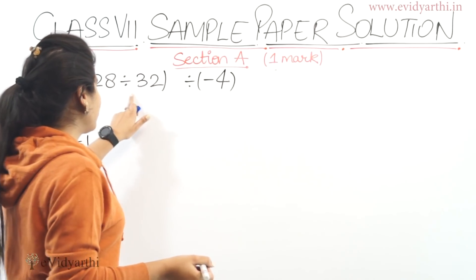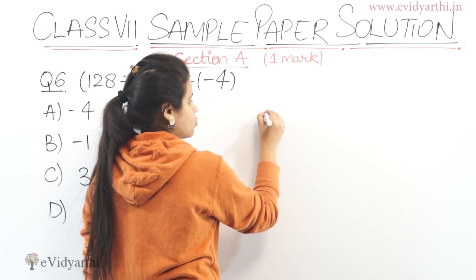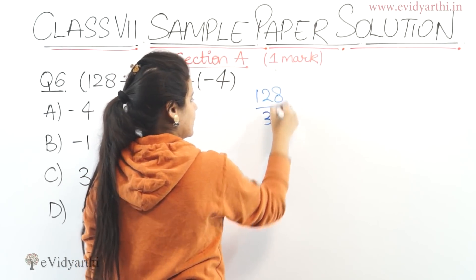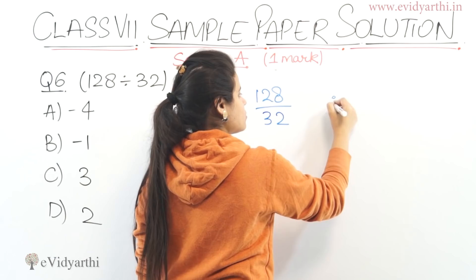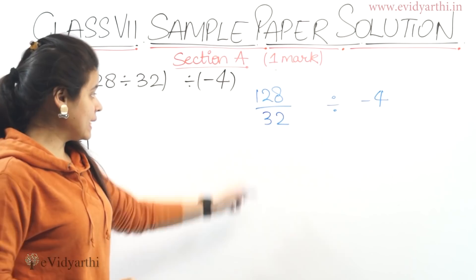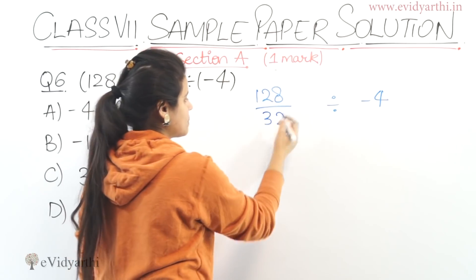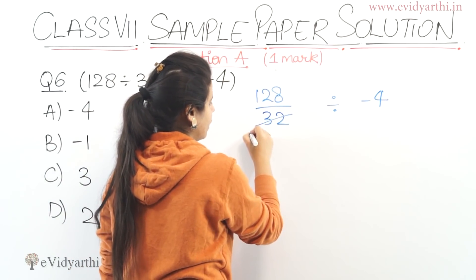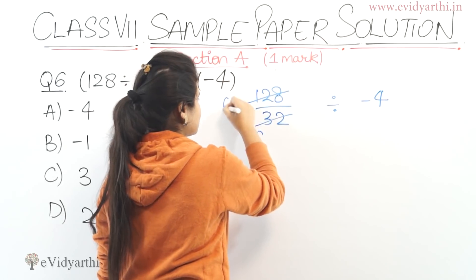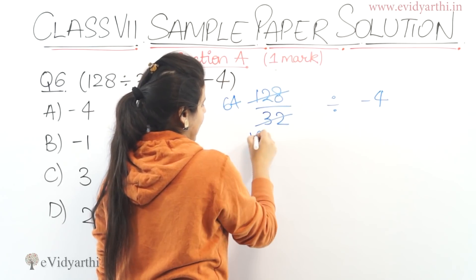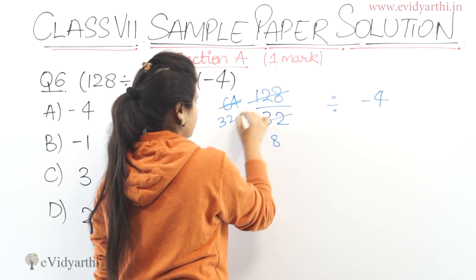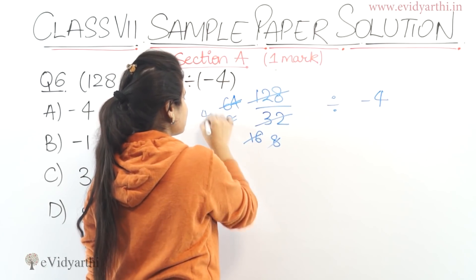First, 128 divided by 32, and then it will be divided by minus 4. Two-kid-able will cancel. This will be 1, 6. This will be 6, 4. And then again cancelling: this will be 8, this will be 32. Now 8 into 4 is 32.